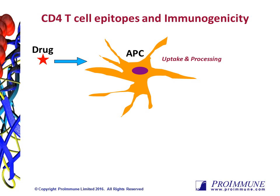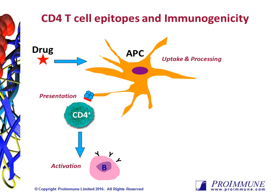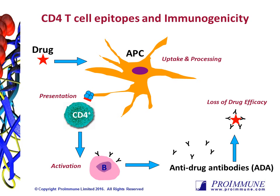In this cartoon, the drug is first taken up and processed by a professional antigen presenting cell, such as a dendritic cell. Those DCs will present peptide epitopes within the context of an MHC class II molecule to helper CD4 T-cells. This interaction is key in driving the remainder of the response, as the activated T-cells can provide help to the B-cells. Activated B-cells can then secrete anti-drug antibodies, which can result in a loss of efficacy, altered PK and PD, and cross-reactivity.